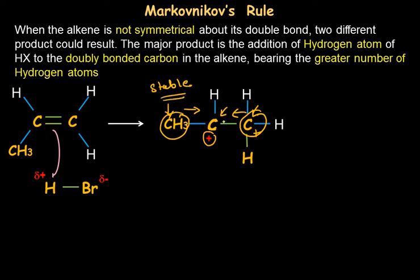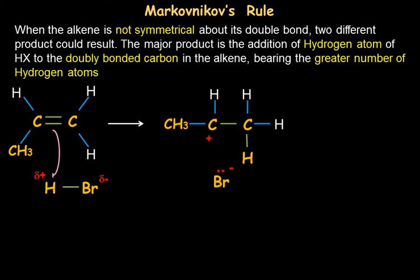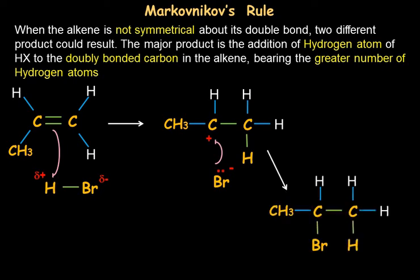Because secondary carbocation is more stable, the secondary bromide is more stable than having bromine go to the primary carbocation. The stable secondary carbocation bonds with the negatively charged bromine atom, resulting in a secondary haloalkane as the major product. In this video we have learnt about the electrophilic addition reaction mechanism along with Markovnikov's rule and many examples.